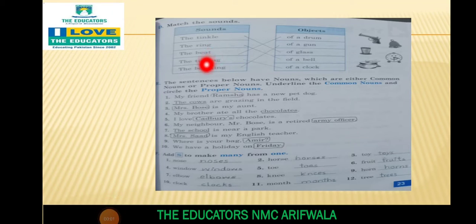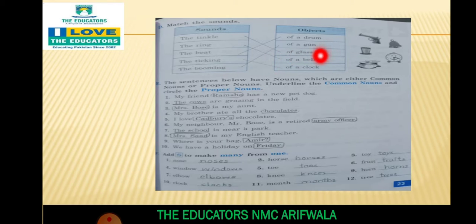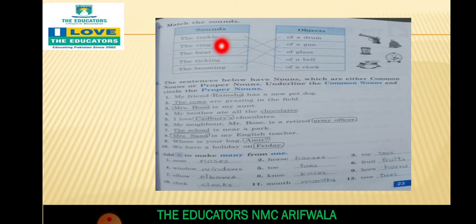Sounds हैं: Tinkle, Ring, Beat, Ticking, Booming. और Objects क्या हैं? Of a Drum, Of a Gun, Of Glass, Of a Bell, Of a Clock.